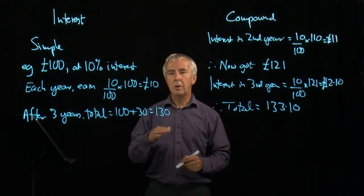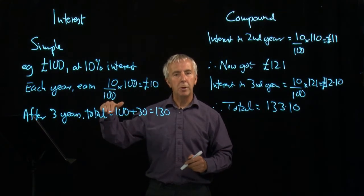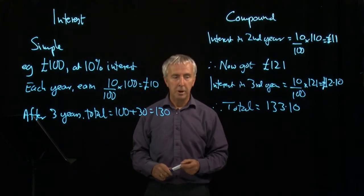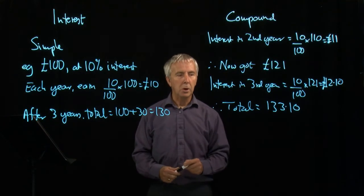Simple interest just goes up at £10 each year forever and ever. This goes up faster and faster. It's sometimes called exponential growth.